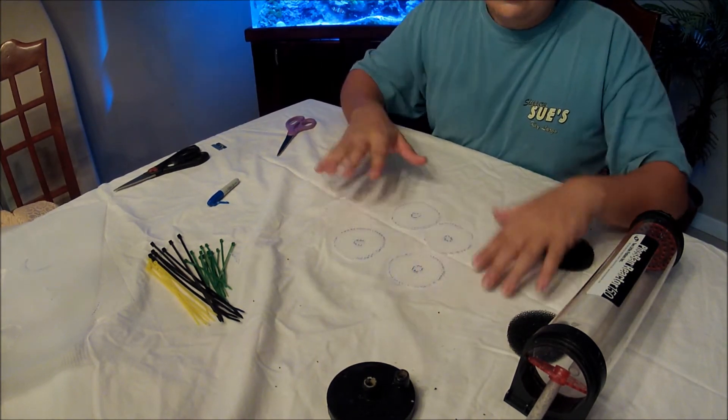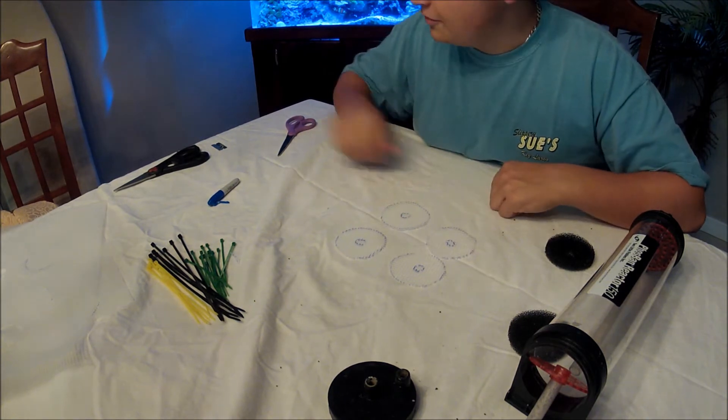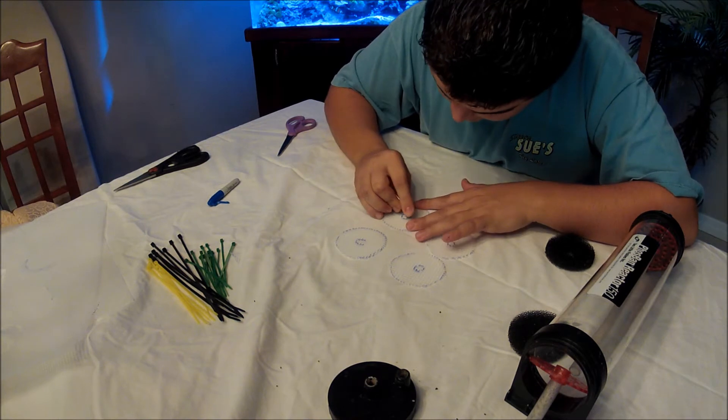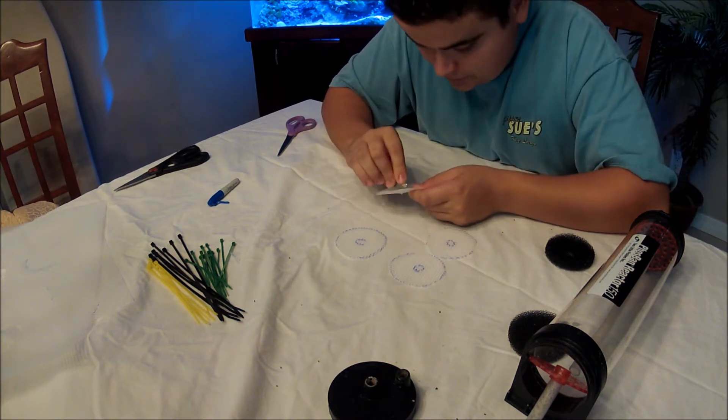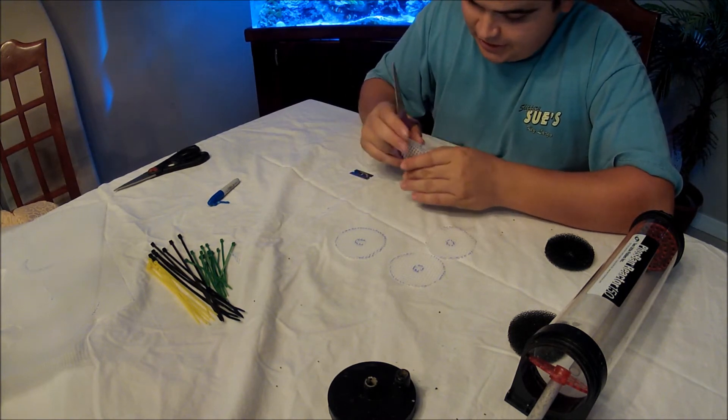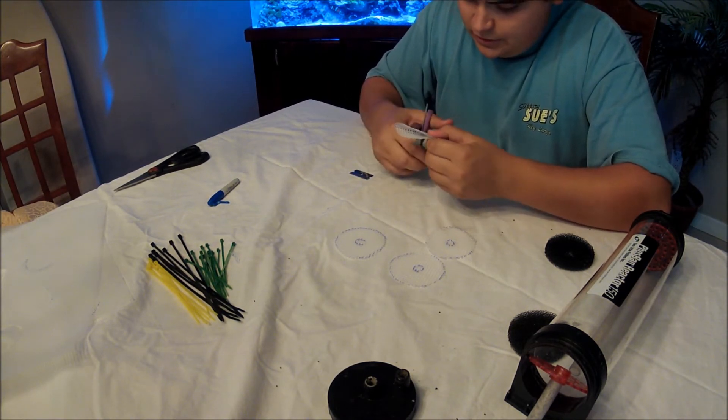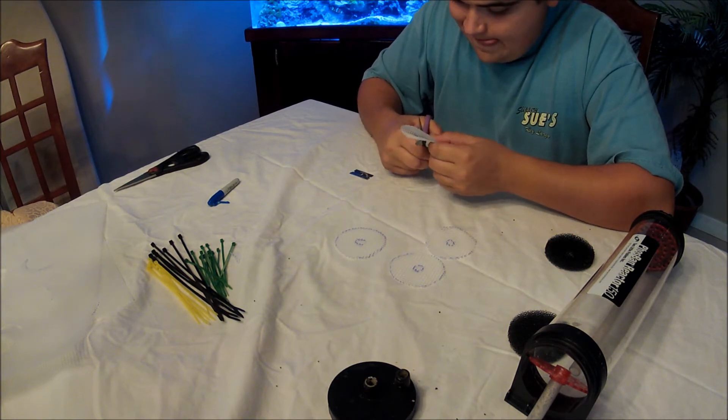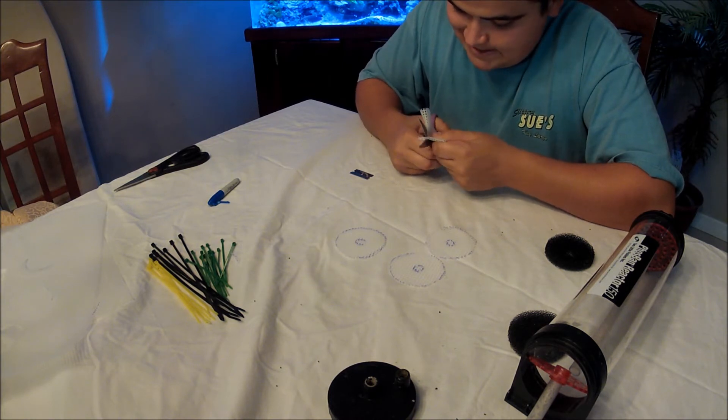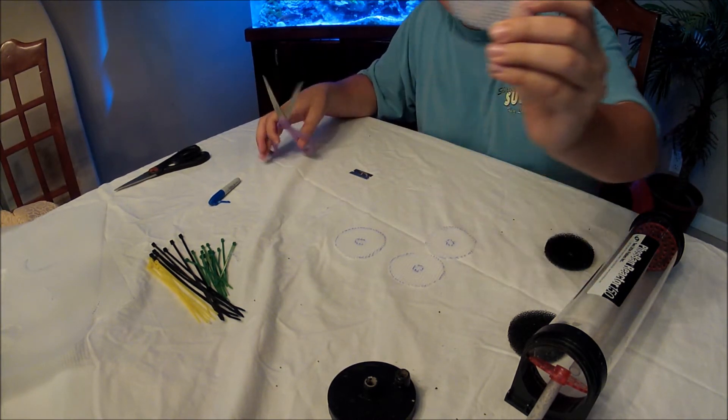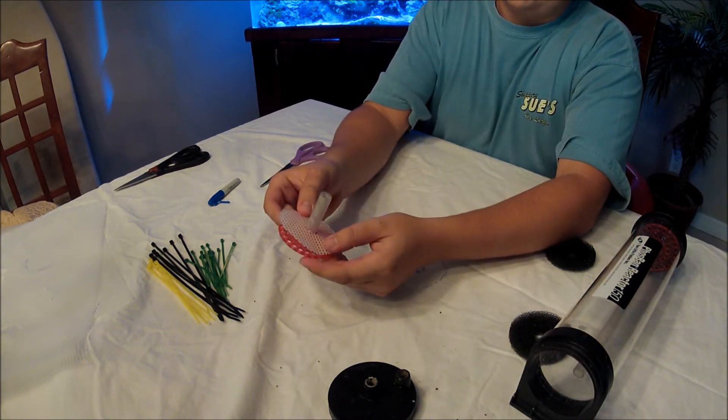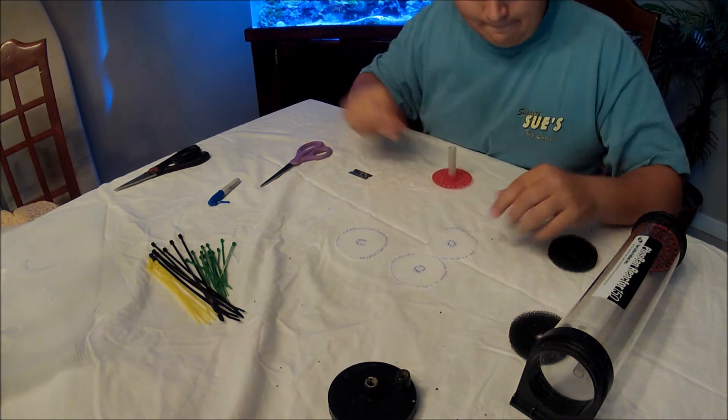Alright, so once you have all four of these, you're going to go ahead and get your Exacto and just kind of, you don't have to cut the whole thing out with the Exacto, just kind of make a hole with it. And then you can just kind of fold it over a little bit. Just kind of cut it out. Remember that hole should slide just perfectly over that.